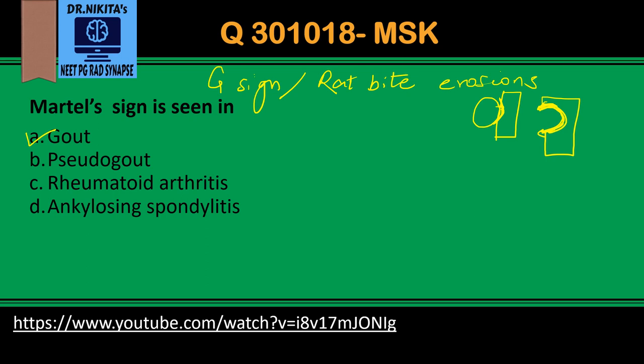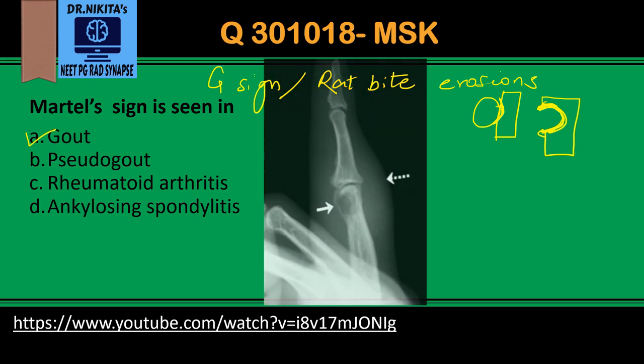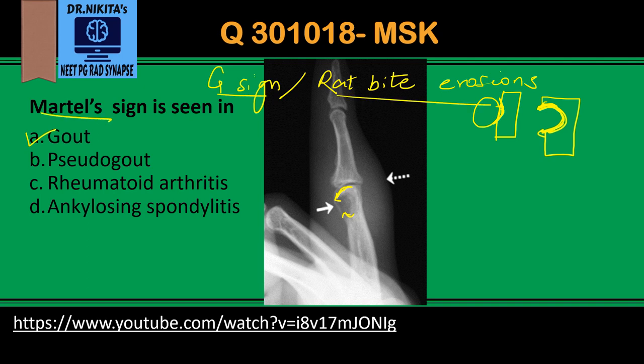Looking at the image, this is the area where you have the lytic lesion in the bone. It is a well-defined punched out lesion with sclerotic margin and overhanging margins. These overhanging margins with punched out lytic lesions represent the Martell sign, G sign, or rat bite erosions seen in gout.